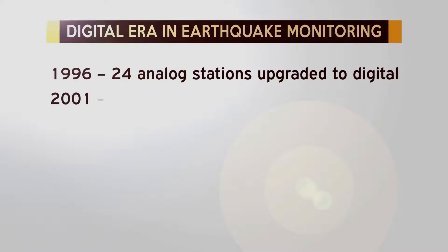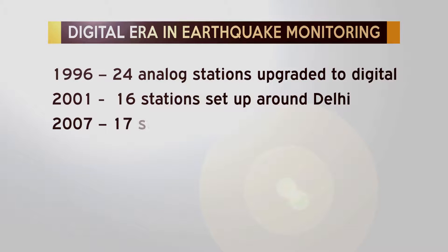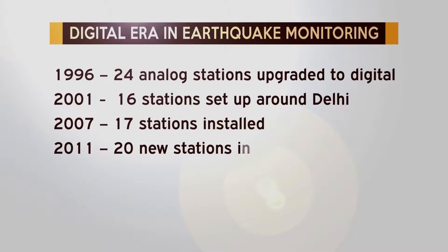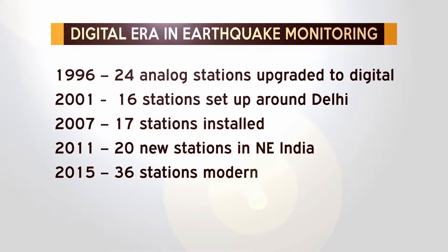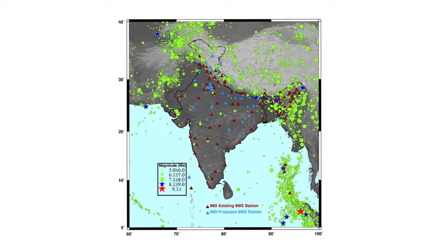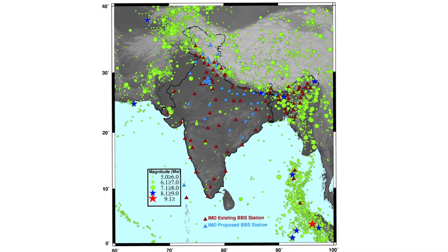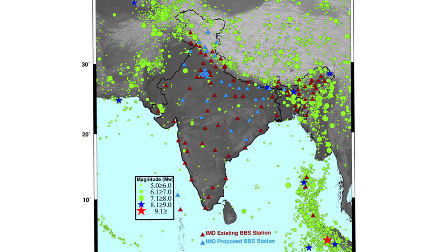In 2001, Delhi got its own network with the setting up of 16 stations. After the devastating Sumatra earthquake, 17 stations were installed in 2007. In 2011, 20 more stations were installed in the north-eastern states of India. In 2015, 36 stations were modernized. Currently, there are 84 earthquake monitoring stations which beam data in real time through VSAT connections, and by end of 2017, there will be 116 such stations all over India.